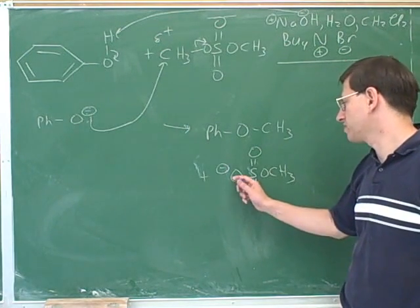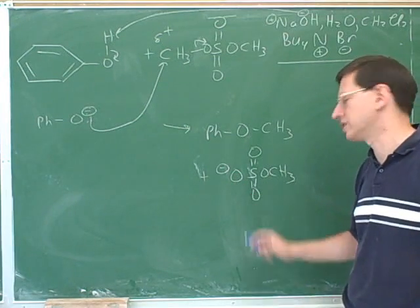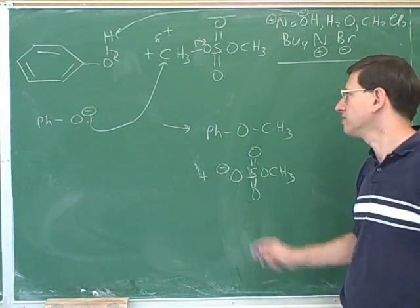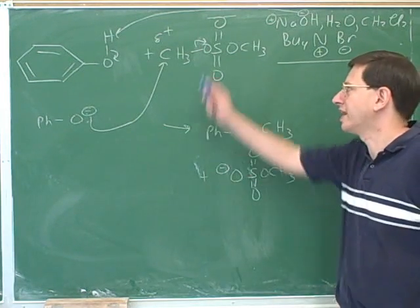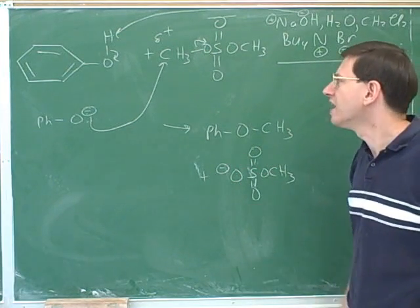There's another resonance structure where the negative charge is on this oxygen, and a third resonance structure where the negative charge is on this oxygen, plus there's a lot of stabilization by induction from all the oxygens. So this is an excellent leaving group. Neutral oxygens are normally not good leaving groups, but this neutral oxygen is good because it will be stabilized by resonance when it leaves.